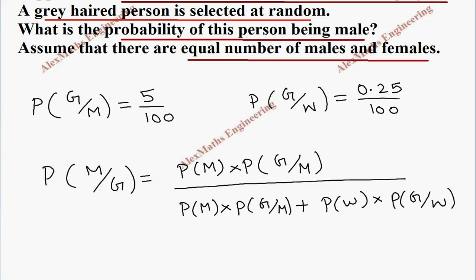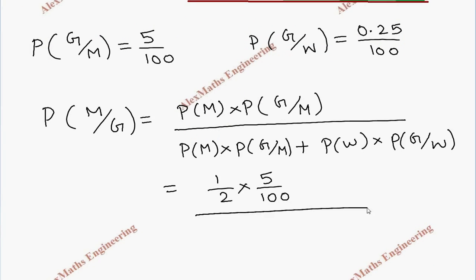Now they say, equal number of males and females. So probability of men is 1 by 2. And women is also 1 by 2. Here, G by M value is given as 5 by 100. Now, in the same way, denominator, if we substitute, it is 1 by 2 into 5 by 100, plus 1 by 2 into 0.25 by 100.